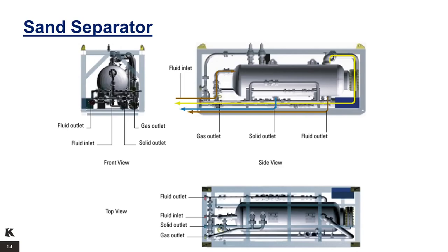Sand separator variety. Sand separators can be two-phase or three-phase. Two-phase sand separators separate sand from the liquid oil component, while three-phase sand separators can separate sand, oil, and gas from one another. Sand separators can also come in various shapes, such as cylindrical, spherical, and cyclonic. Spherical sand separators are known to provide the best gas, liquid, and sand capacities. However, cyclonic sand separators typically offer better separation efficiency.